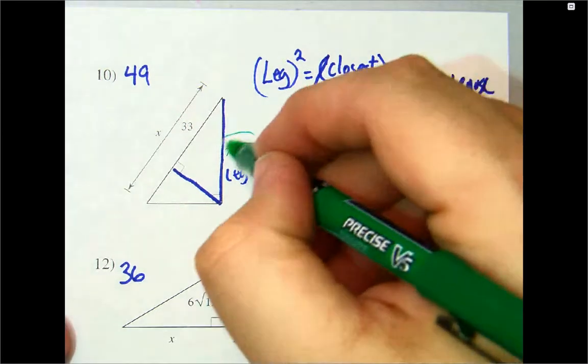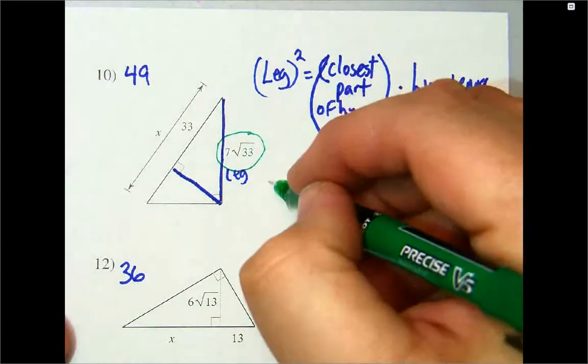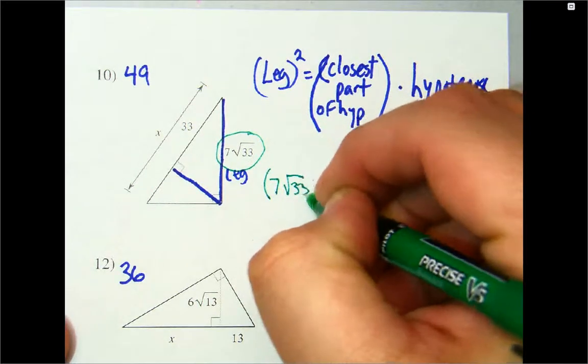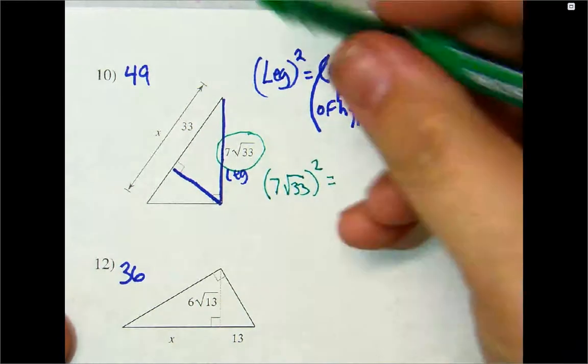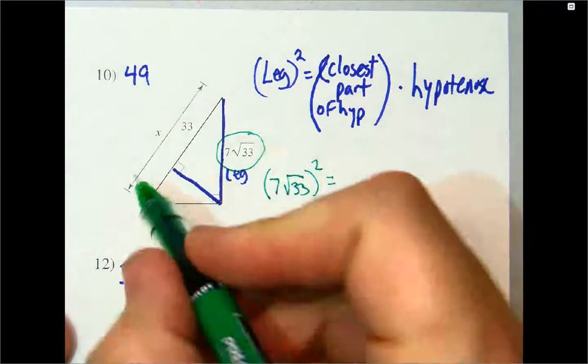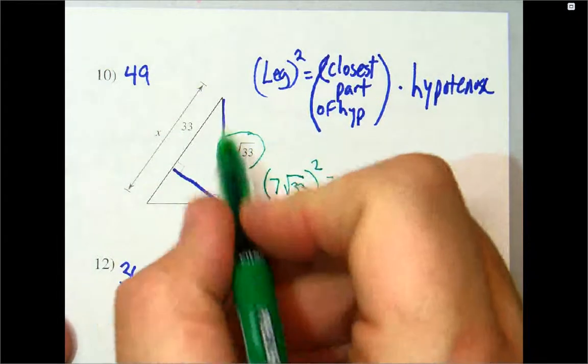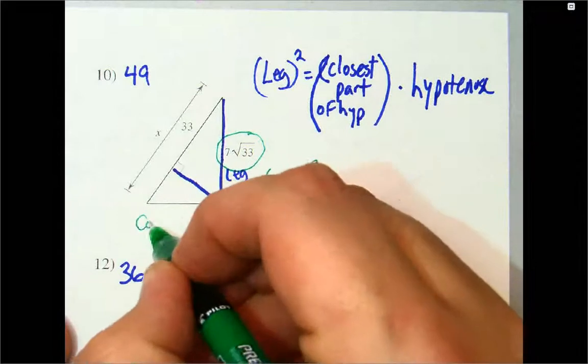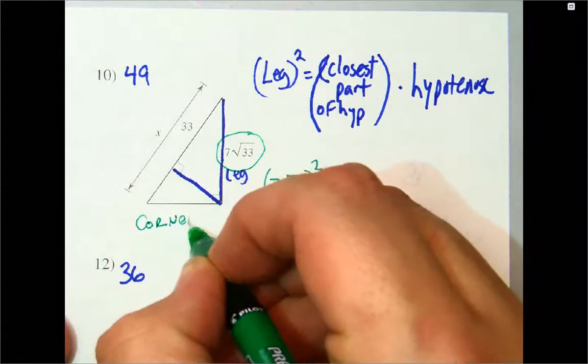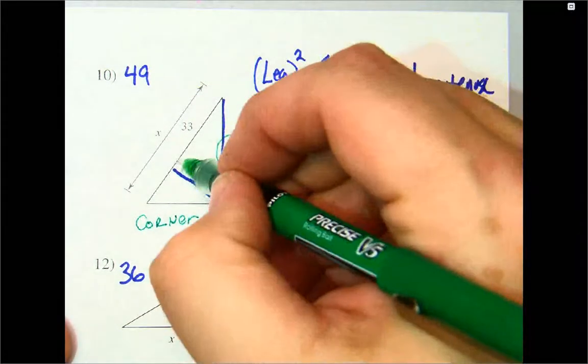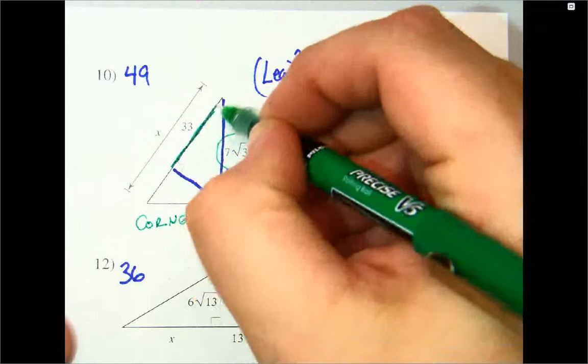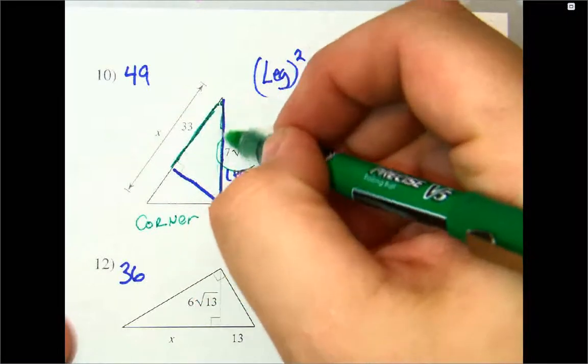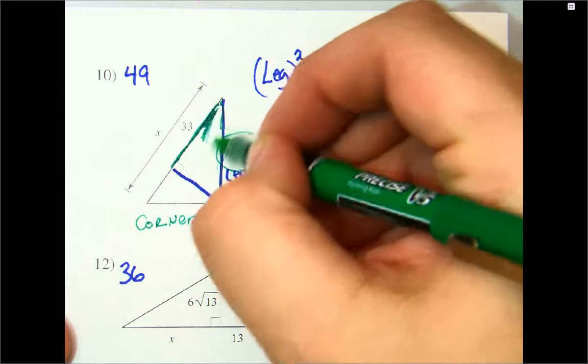Now, this is your leg. So, I need 7 times the square root of 33 quantity squared. Now, also, the way that I kind of look at when you're dealing with the leg part, it's all about the corner. It's all about making a corner. And the corner is going to be this part right here. The leg that you have and this part that you have makes a corner, and this is the corner that I'm talking about.